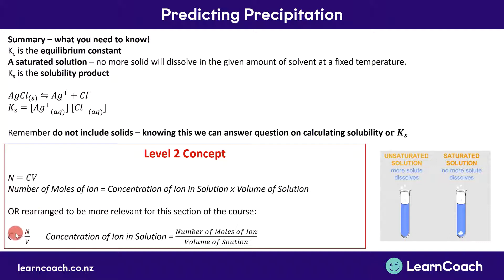Just rearrange this equation to give us concentration, and you'll see that it equals C equals N over V. I like to think of it as cats not over vases, but each to their own.